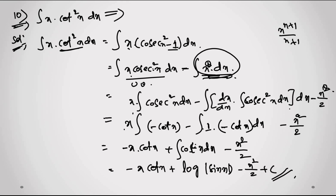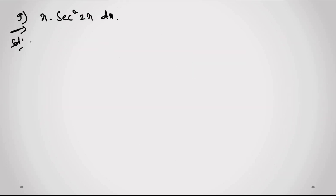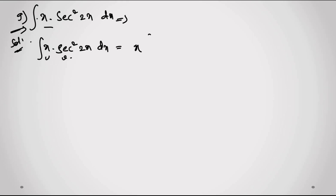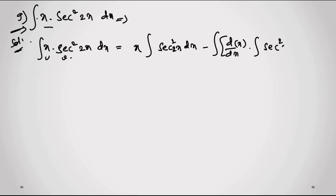Now question 9. Given: integral of x·sec²(2x) dx. We take u = x and v = sec²(2x). Applying integration by parts: x·integral of sec²(2x) dx minus integral of [d/dx of x · integral of sec²(2x) dx] dx. The integral of sec²(2x) dx = tan(2x)/2, because the derivative of 2x gives a factor of 2.